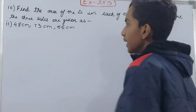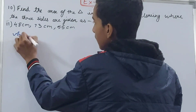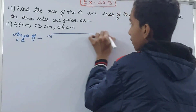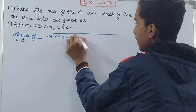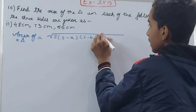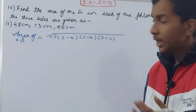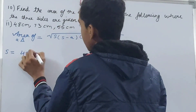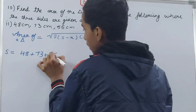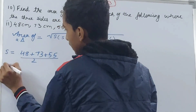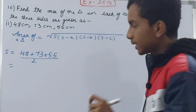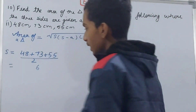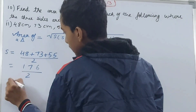Now let's move on to the next part. Again we use the same formula: area of a triangle = √(s(s−a)(s−b)(s−c)), because again all three sides are given: 48, 73, and 55. First, calculate s: s = (48 + 73 + 55) / 2 = 176 / 2 = 88. So the value of s is 88.